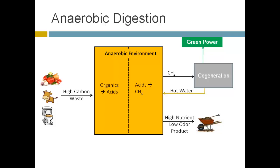I don't think I need to give too much background on what anaerobic digestion is — the last presenter covered that. But briefly: you have a high organic carbon waste stream — anything from animal manure, food waste, or municipal waste — introduced to an anaerobic environment. It's converted into organic acids, which are then anaerobically converted to methane, which can be used for cogeneration. The products also have high nutrients, low odor, and we get near-complete pathogen removal through this process.